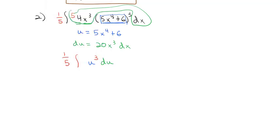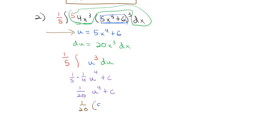It's an easy antiderivative now: u to the fourth times 1/4, and we also have the 1/5 out front plus c, which gives us 1/20 u to the fourth plus our constant. Converting back to x's, we have 1/20 times 5x to the fourth plus 6, raised to the fourth power, plus a constant.